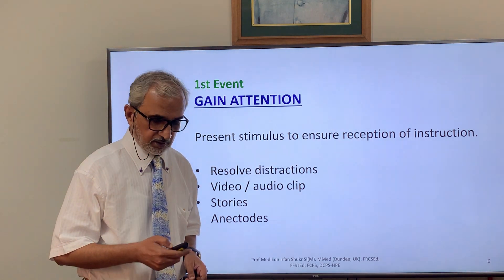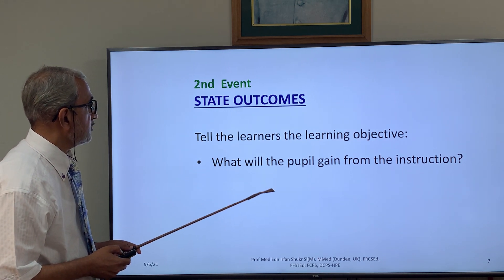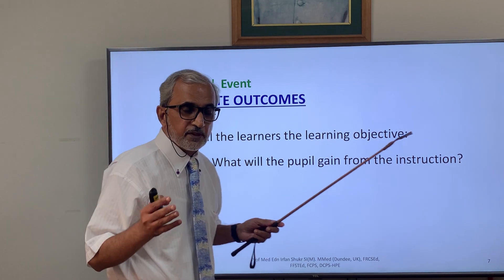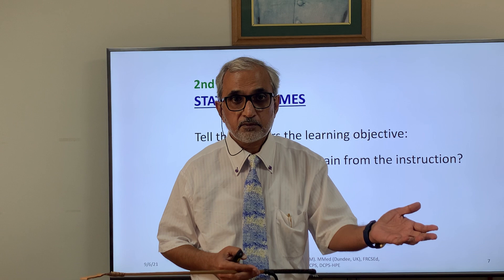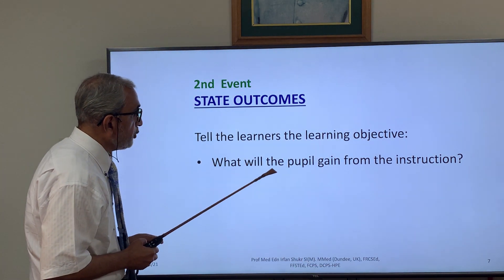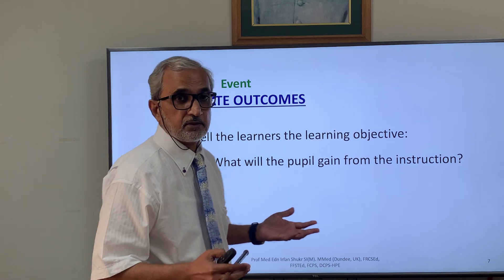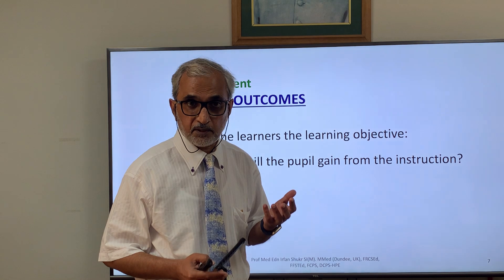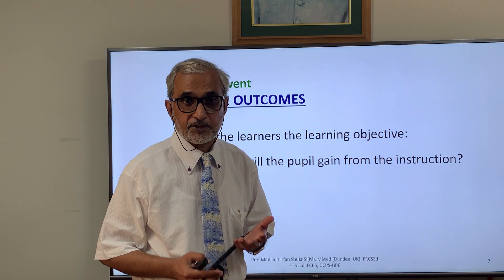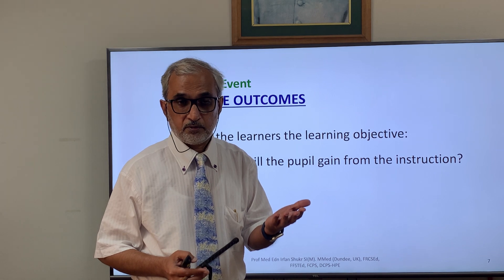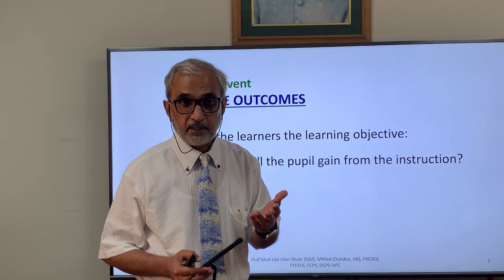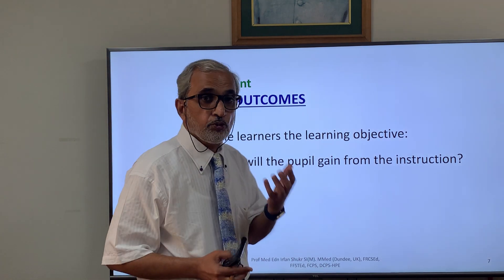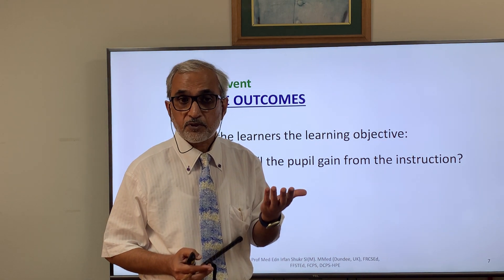Once attention has been gained, the next step is the second event: State Outcomes — tell the learner the learning objective. That is: at the end of the session, what will you be able to do? What will the pupil gain from this instruction? For example, in this lesson I gained your attention by showing a video and printed slides, and now I am stating the outcome: you will learn Gagné's nine events of instruction.